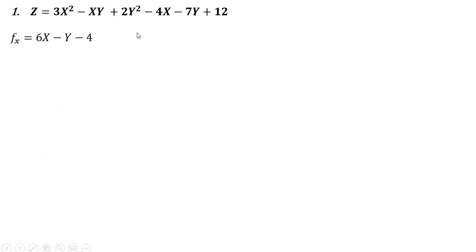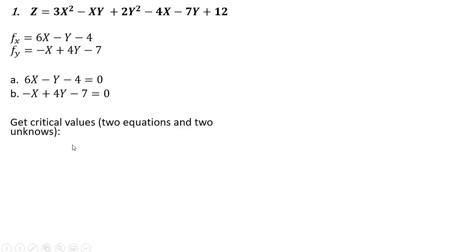So here's our function. Let's first get the first order partial derivatives to find the critical values. Set each one of these equations equal to zero. And we got two equations and two unknowns. So take equation A, solving it for y, and then plugging that into equation B.